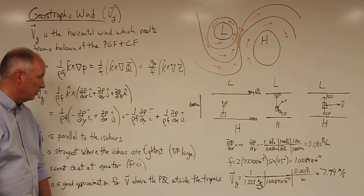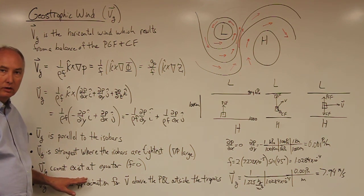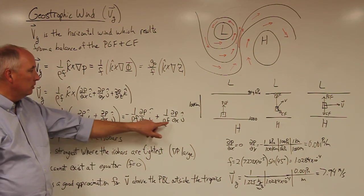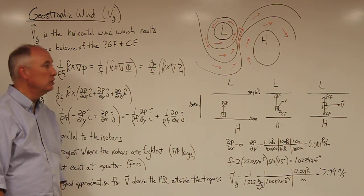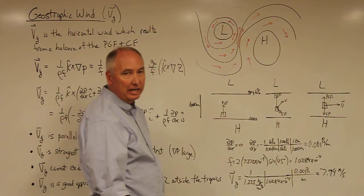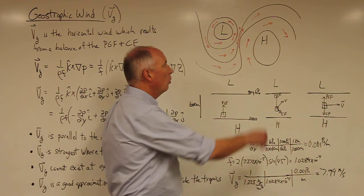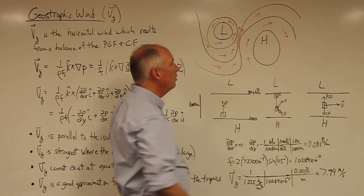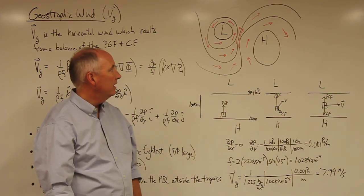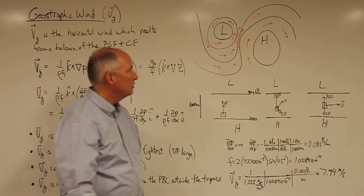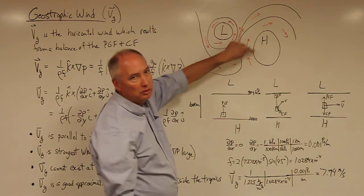Let's use this to understand why Vg cannot exist at the equator. At the equator, f is equal to zero. If f equals zero, then this term explodes and you can never have a balance of the two forces. For a high and a low pressure system in the northern hemisphere, the pressure gradient force wants to move air parcels from high toward low, but the Coriolis force deflects those parcels to the right. This results in clockwise rotation around the high and counterclockwise rotation around the low.